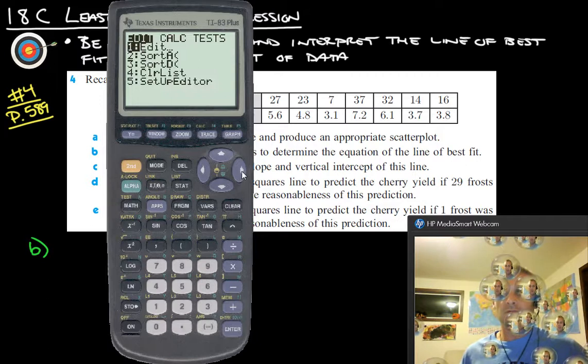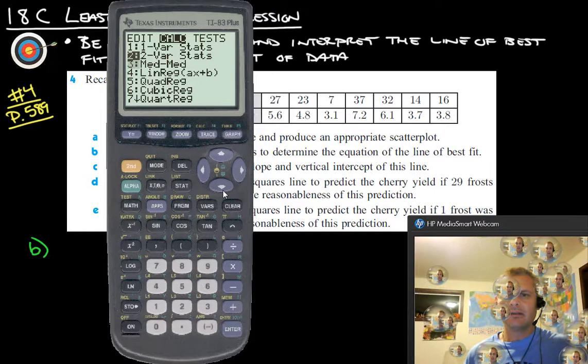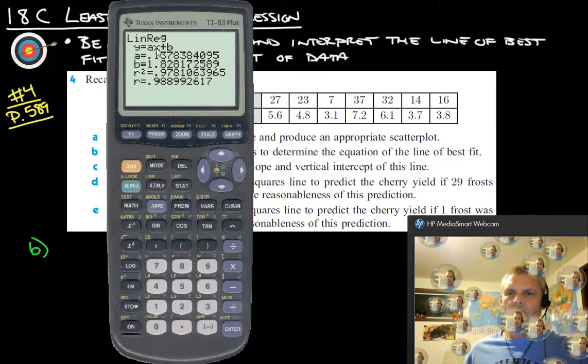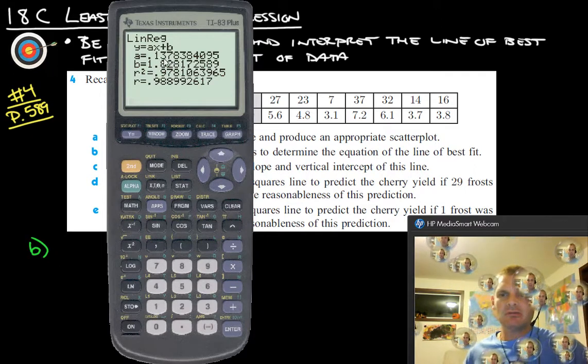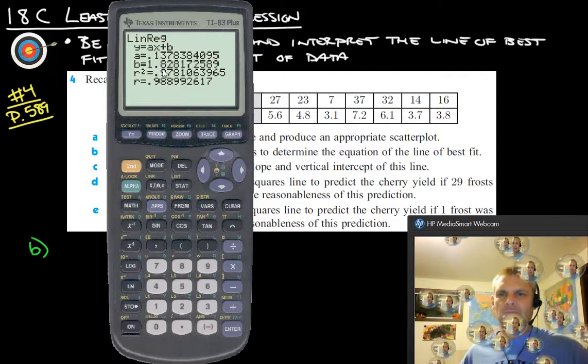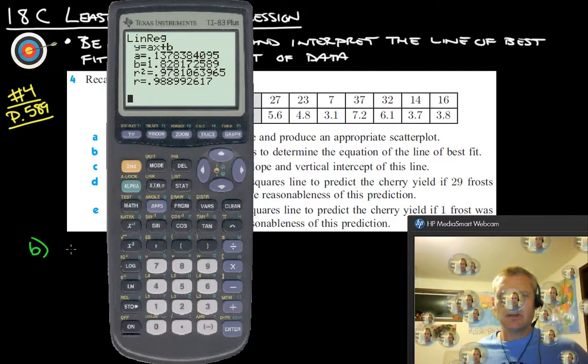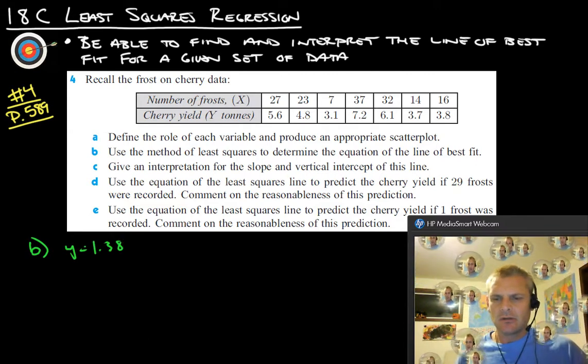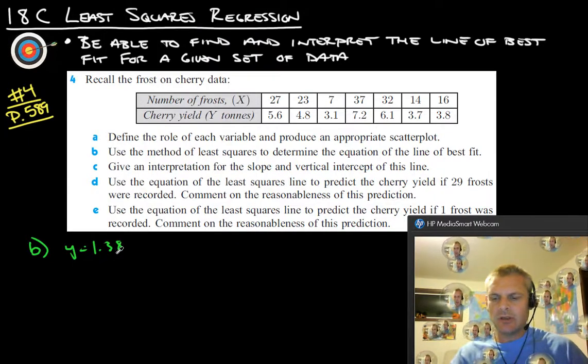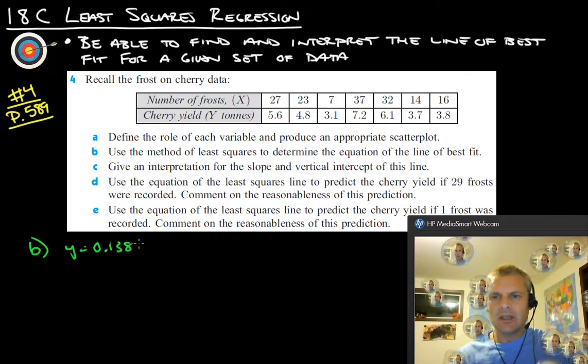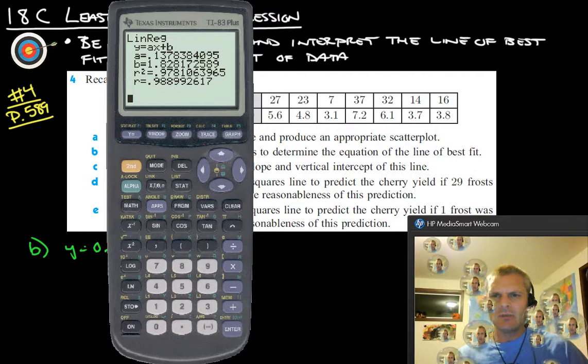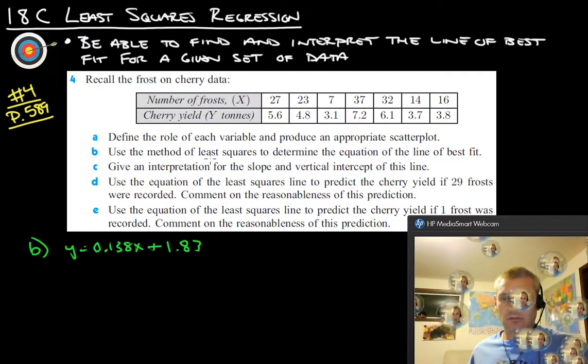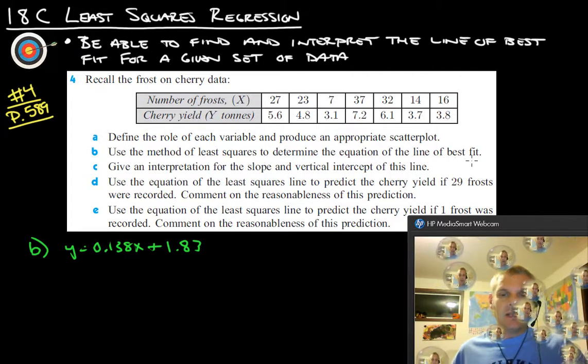And now we're going to want to find our linear regression. So we're going to go over back into stat and over to calculate. And linear regression. Push enter. And then enter again. And our equation would be Y equals 0.138X plus 1.83. So let's see. We got Y equals 0.138. Oh, wait. I think that was. Is that right? That doesn't look right. 0.138, not 1.38. 0.138X plus, and we had 1.83. So there's our least squares line.